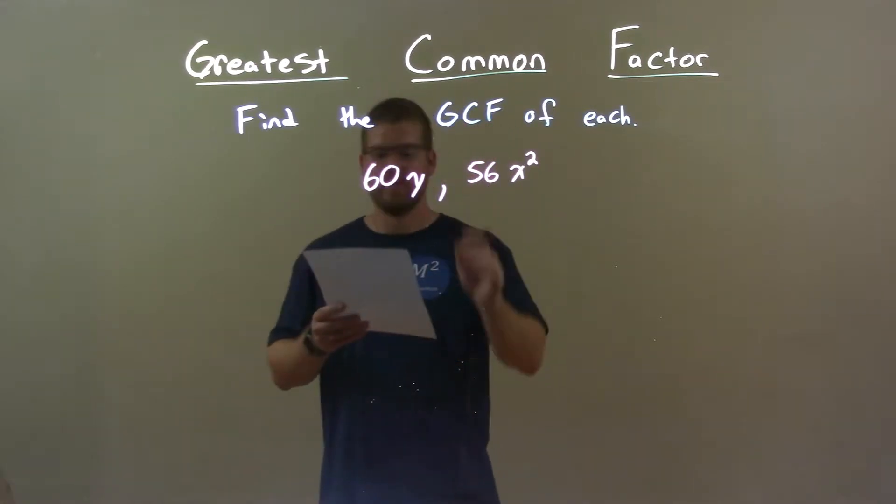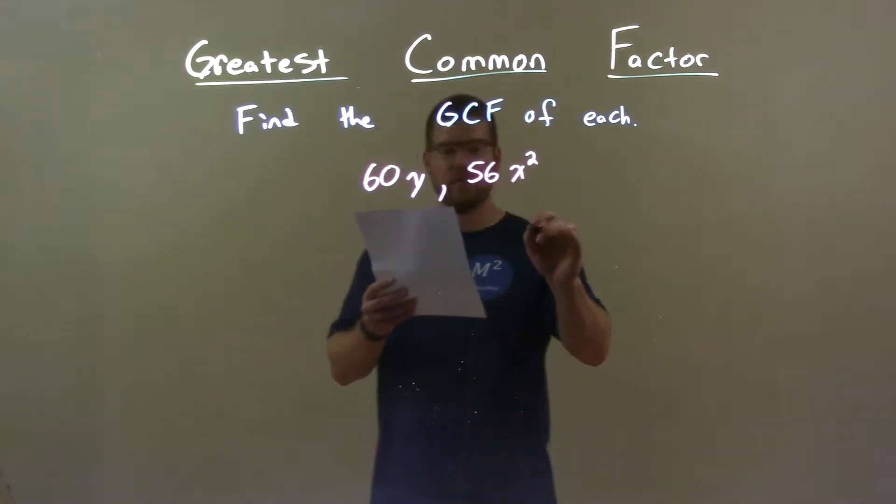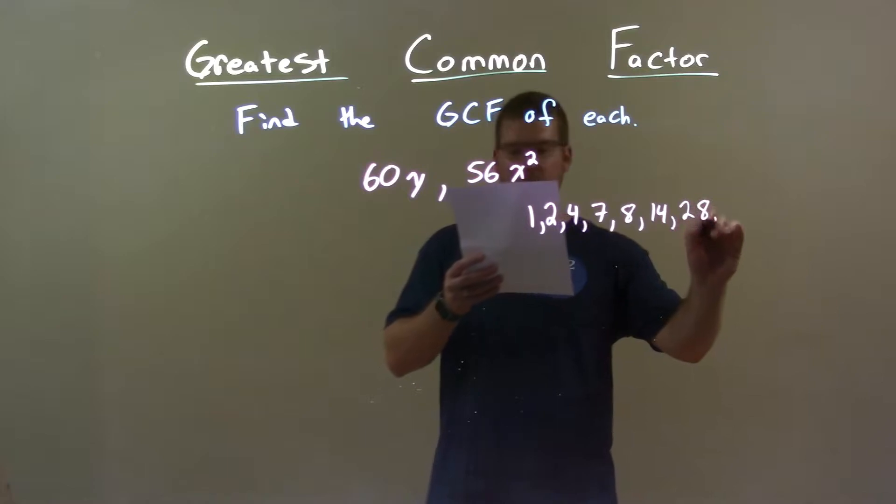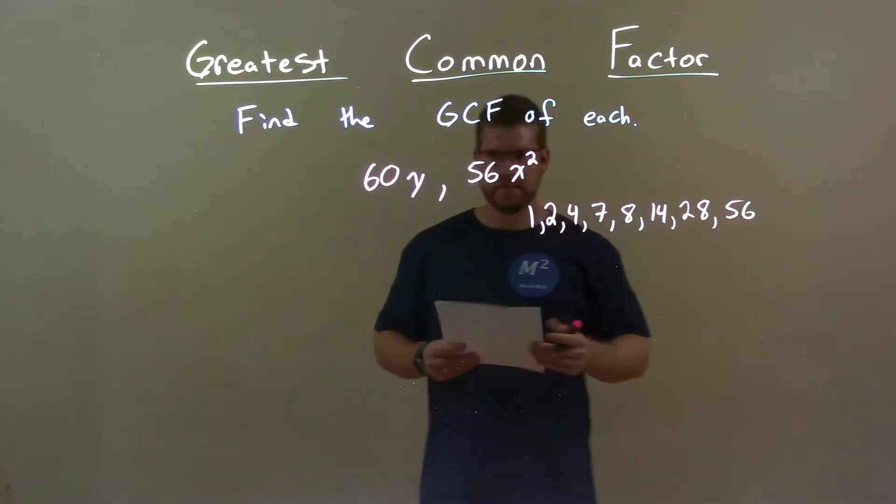Well, the smaller one of these two numbers is 56, and the factors of 56 are 1, 2, 4, 7, 8, 14, 28, and 56.